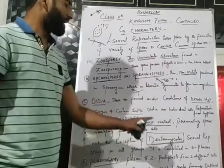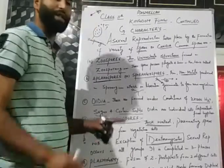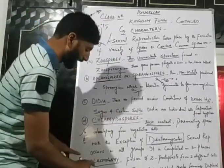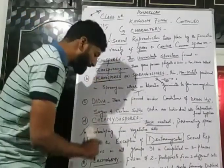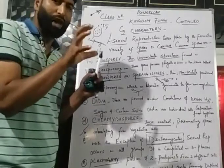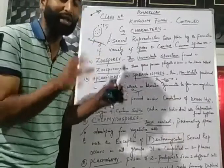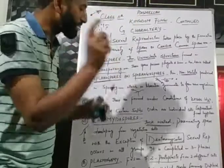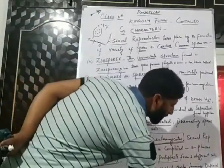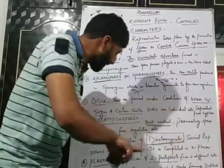Sexual reproduction occurs in all groups but Deuteromycetes, and it is completed in three phases. The first phase is plasmogamy. Plasmogamy is the fusion of two protoplasts. A protoplast is a cell lacking a cell wall. The fusion of two protoplasts is called plasmogamy.